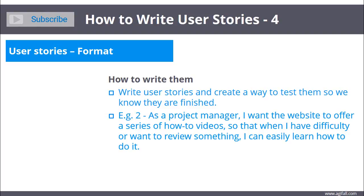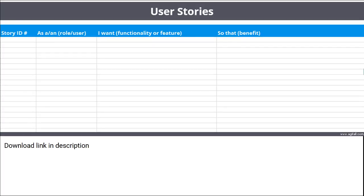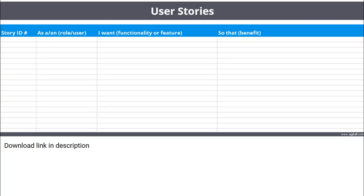There are multiple ways to keep track of your user stories. I have added a downloadable Excel option here. Other professionals may use Jira or other PM tools to keep track of their user stories. Just remember, the best case scenario is if these stories can be visible. If you have wall space, put them up on the wall — this helps increase collaboration, promotes transparency, and others will know when there are new stories up on the board.